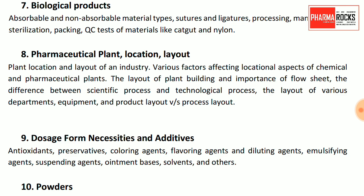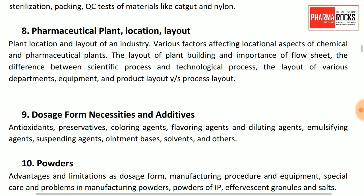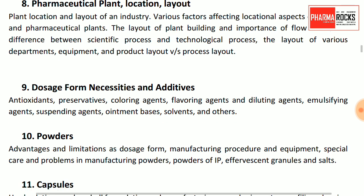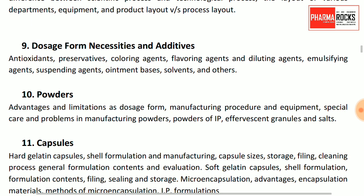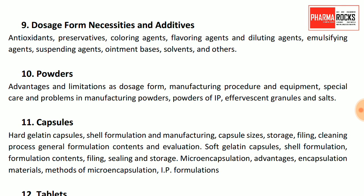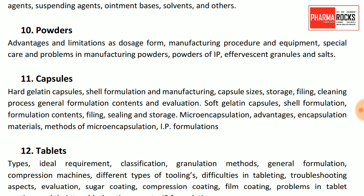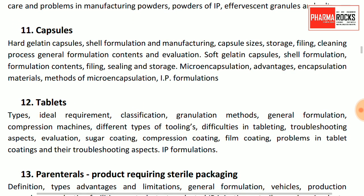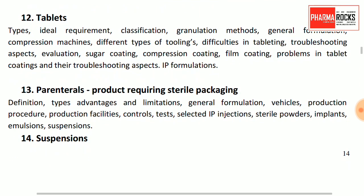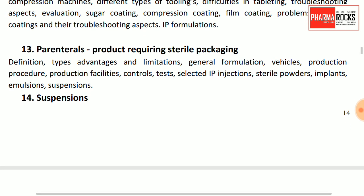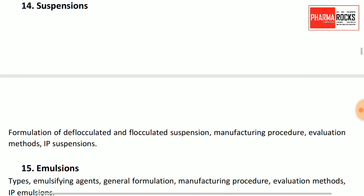Biological products — absorbable and non-absorbable sutures and ligatures, their sterilization. Pharmaceutical plant location and layout is also important. Dosage form necessities and additives, powders, tablets, parenteral products, and evaluations of tablets, capsules, and other dosage forms including parenteral suspensions.